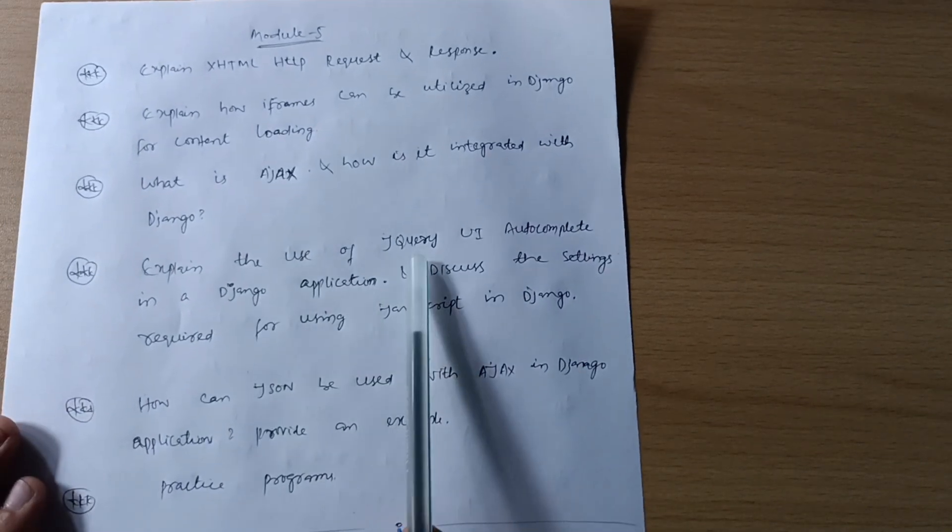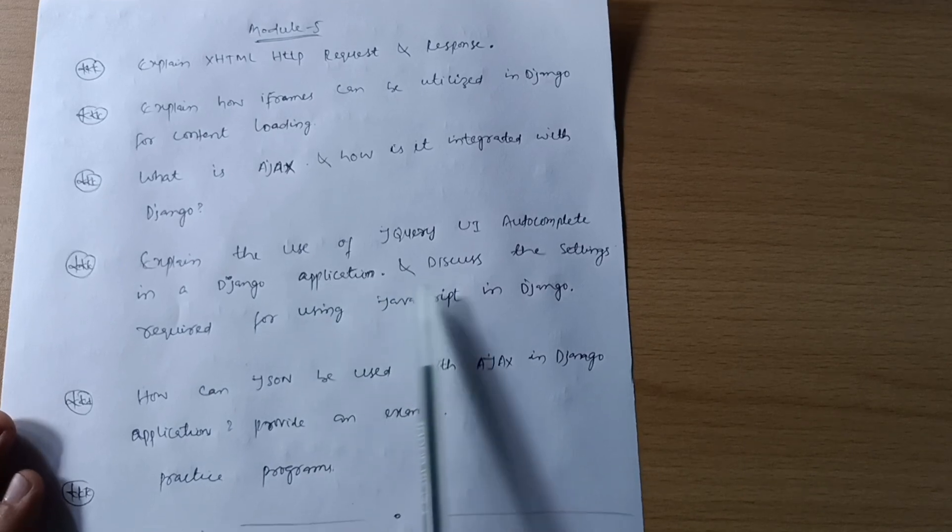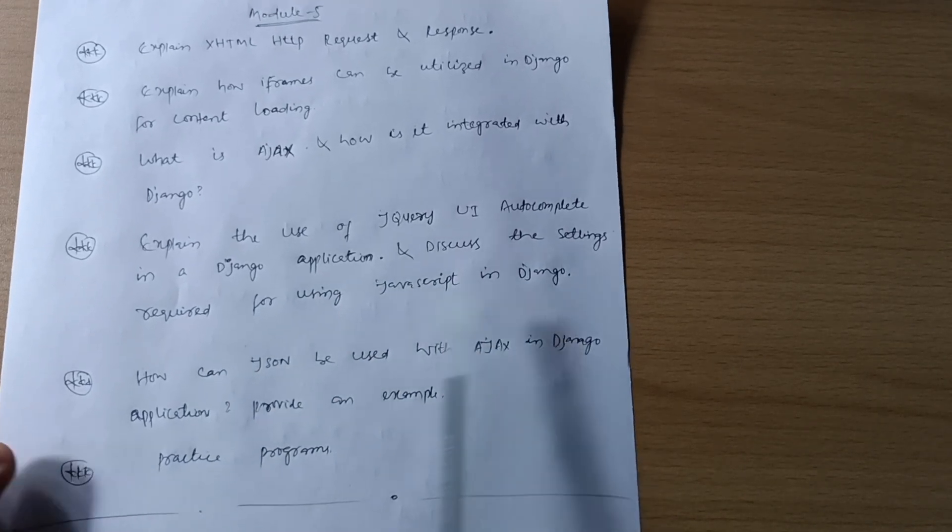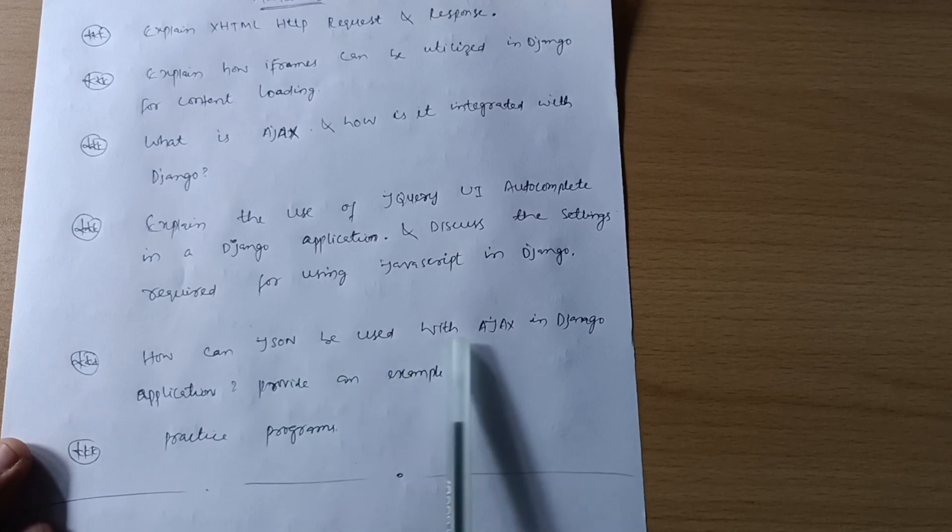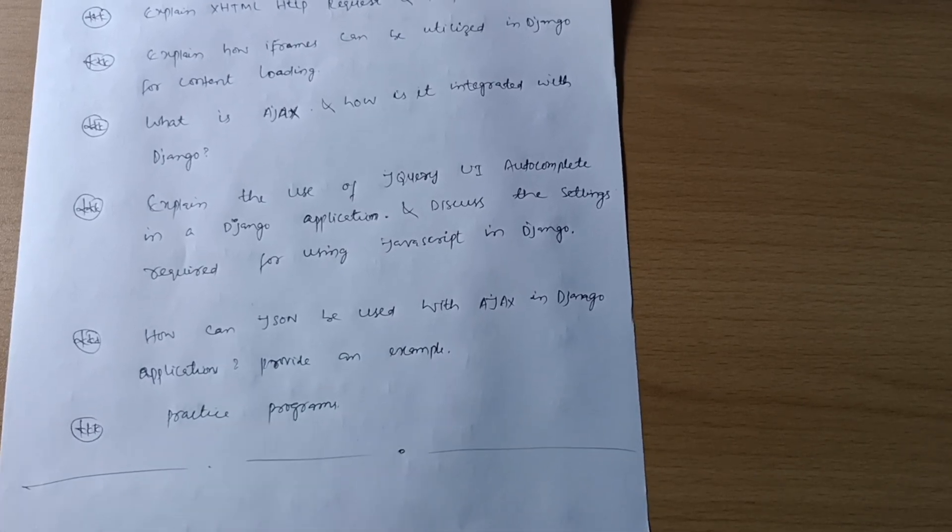Explain the use of jQuery UI autocomplete in a Django application and discuss the settings required for using JavaScript in Django. How can JSON be used with AJAX in Django applications? Provide an example. Practice programs as I earlier mentioned.